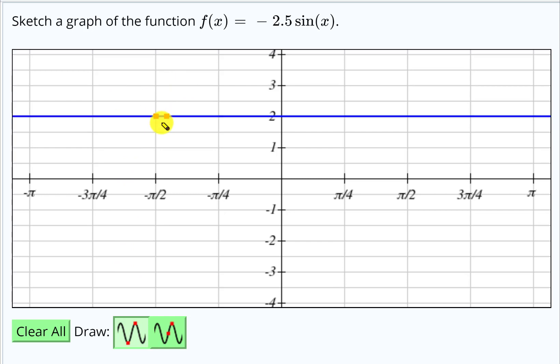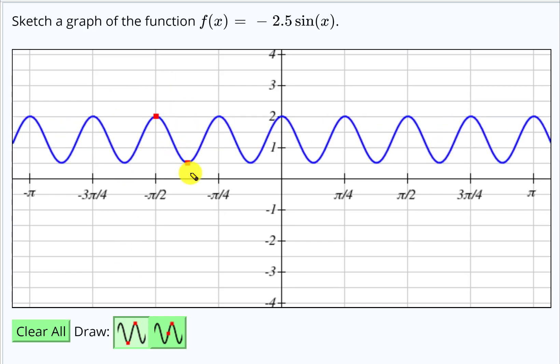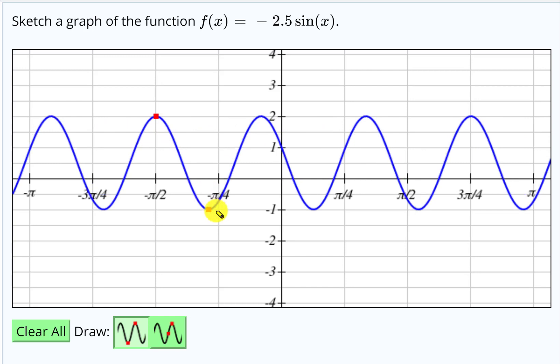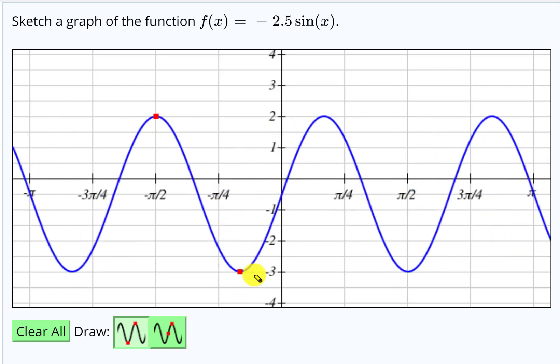You'd click somewhere where you wanted a max or a min, and then you can drag to get the minimum wherever you would want it. I clicked the max, so now I can get the min.